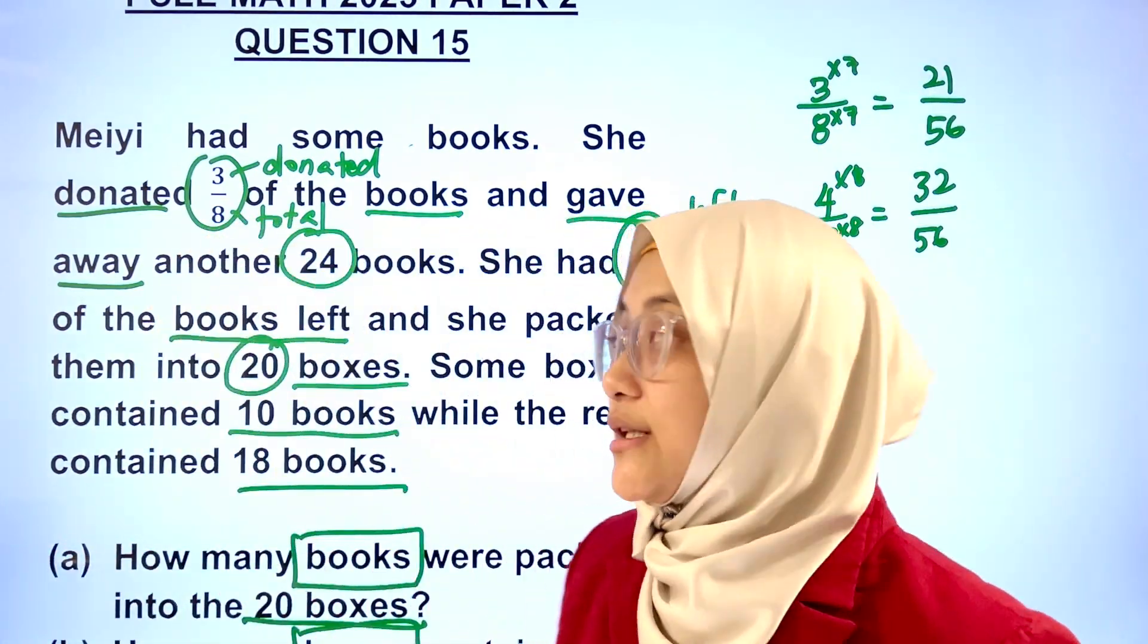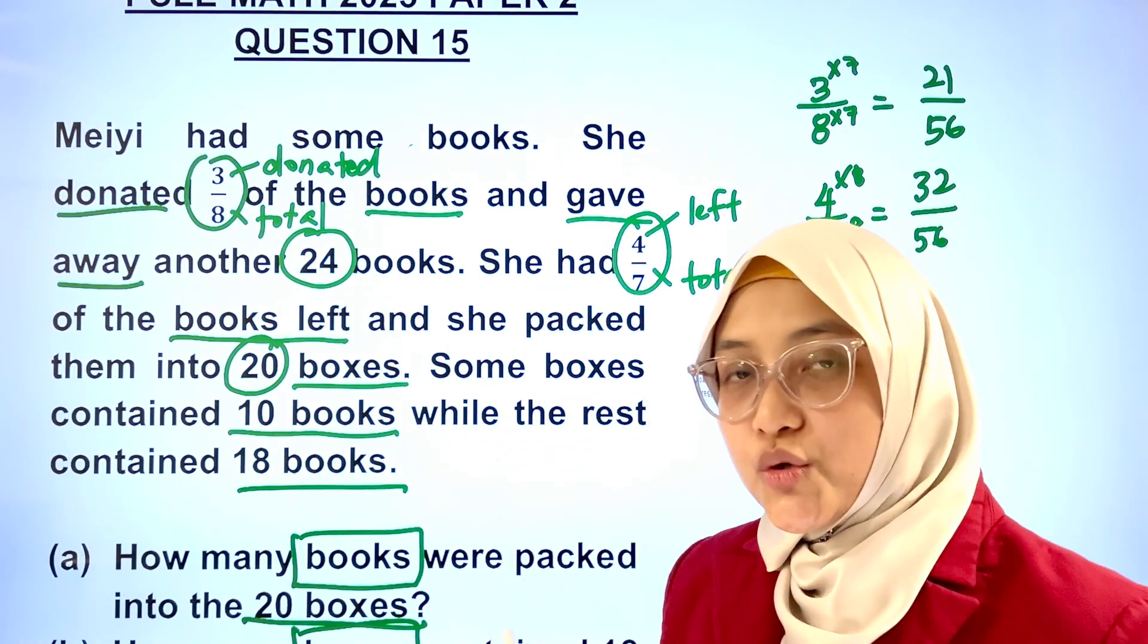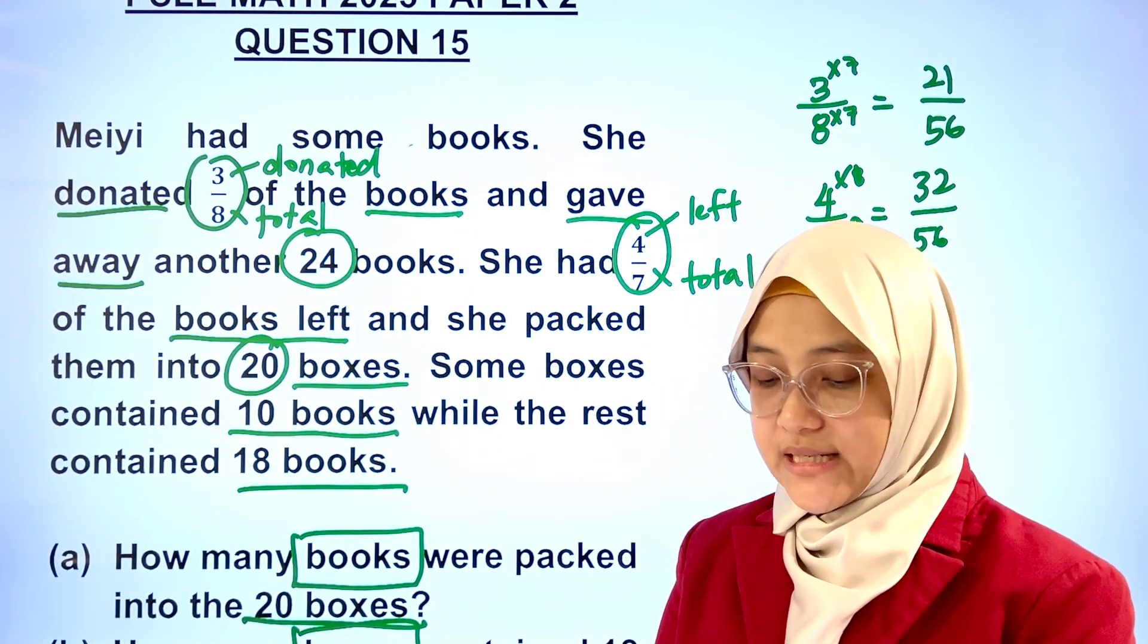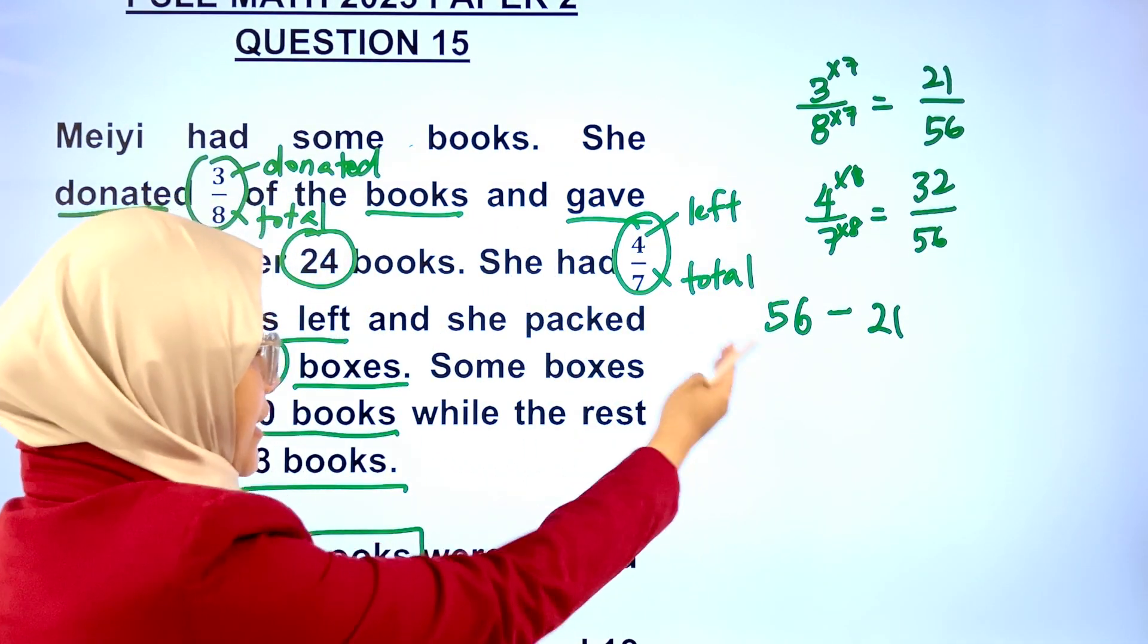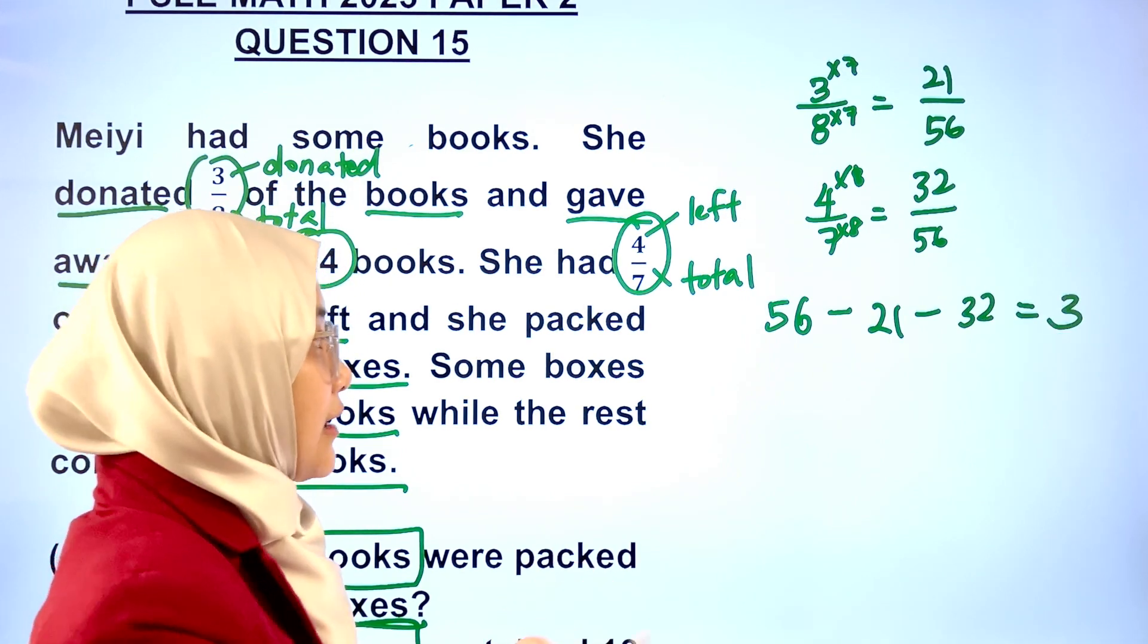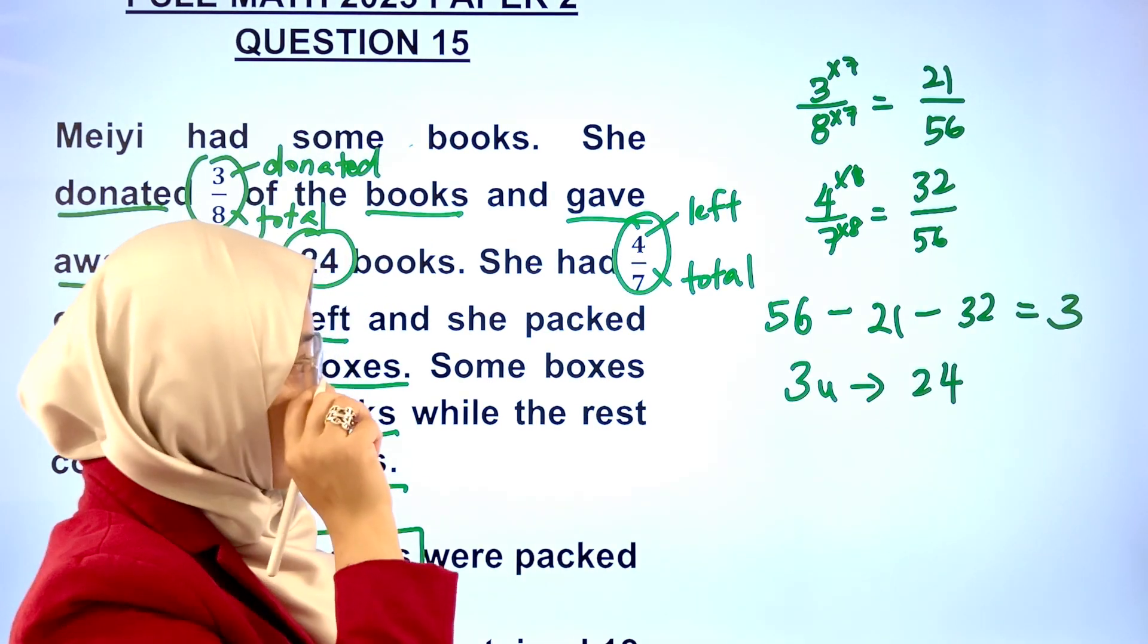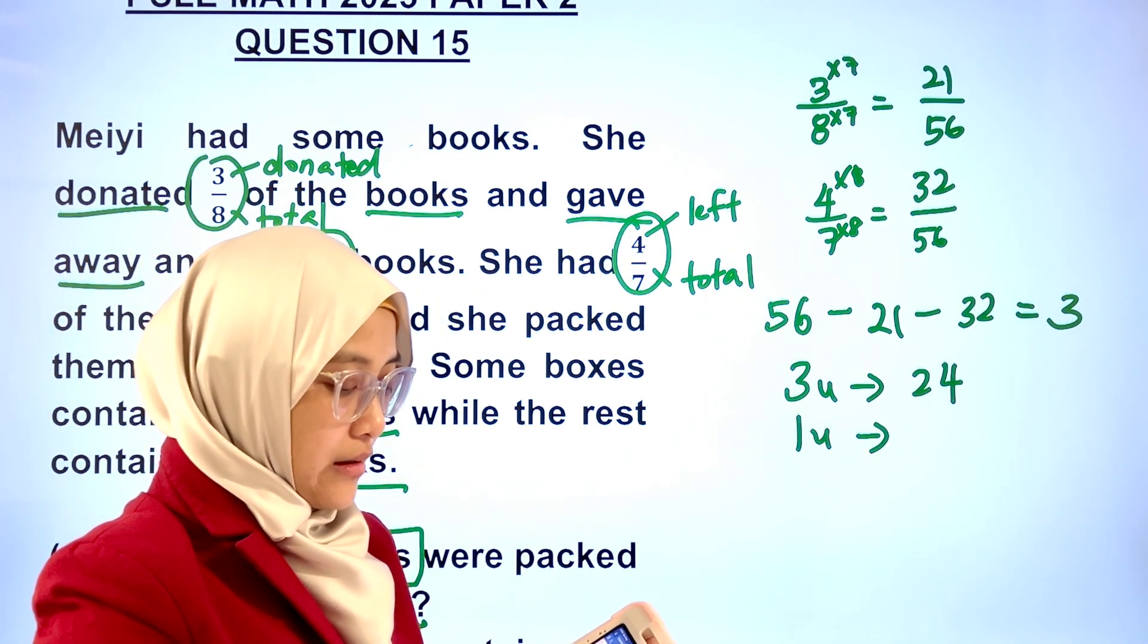There's one more information that we have not used. 24 books. How many units represent 24 books? Let's calculate together. Total units, 56, minus 21, minus 32, and we get 3 units. 3 units represent 24 books. Always find 1 unit, which is 8.